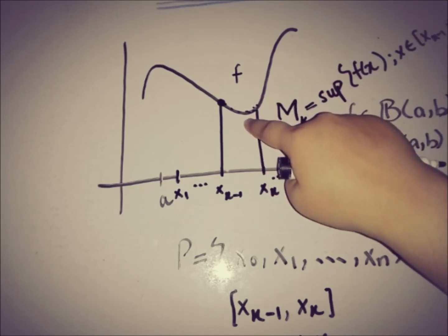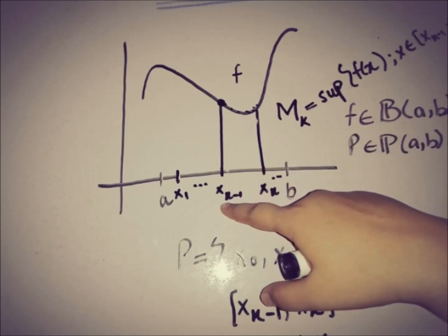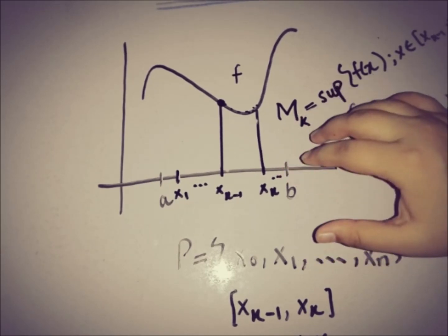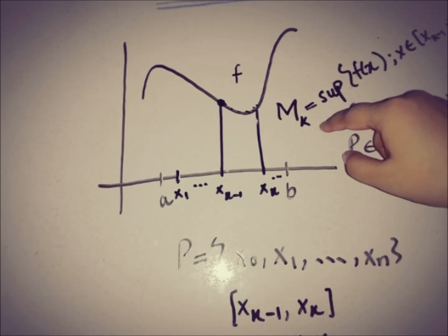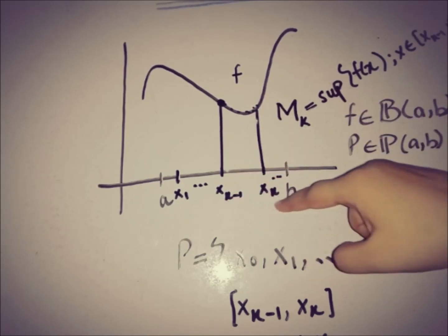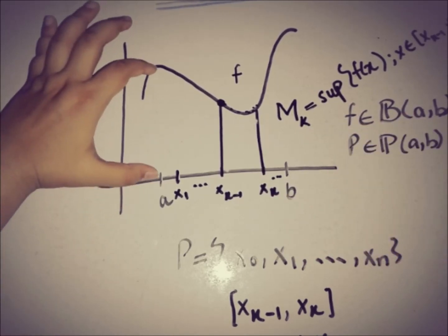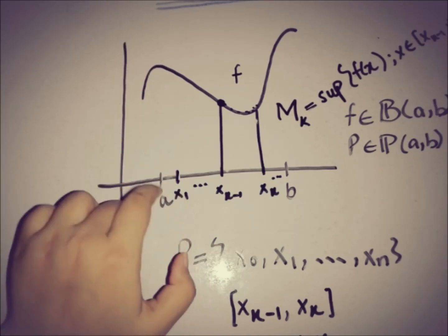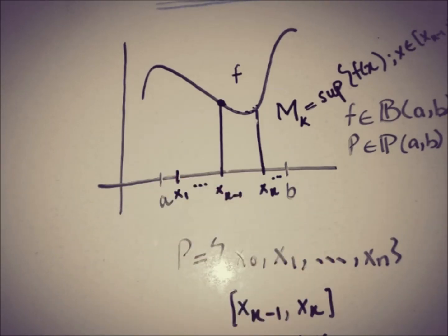M_k is the supremum value. If the function is not visualized, M_k is the supremum of the values of f at the given interval. So if it is M₁, then it is the supremum of f on [x₀, x₁], that is between a and x₁. If it is M₂, then it is the supremum between x₁ and x₂, and so on.